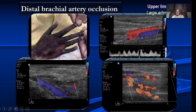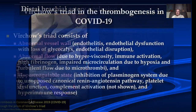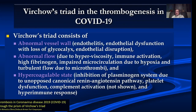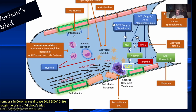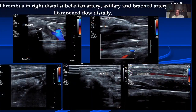In this era of COVID, we are seeing upper limb arterial occlusion because of the disease. Whenever there is a hypercoagulatory state, thrombosis can occur. Virchow's triad consists of abnormal vessel wall, abnormal flow, and a hypercoagulatory state — in COVID, many factors contribute to these and can give rise to thrombosis. We have seen patients presenting with upper limb ischemia who subsequently tested COVID positive.